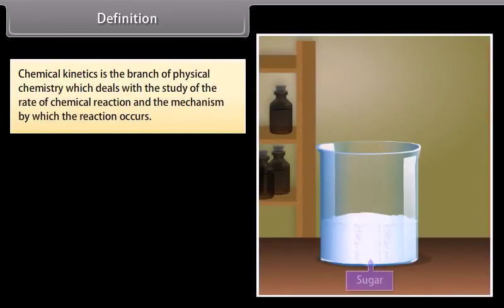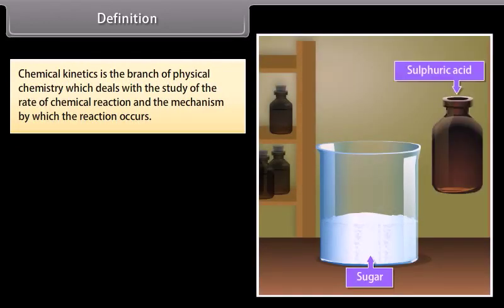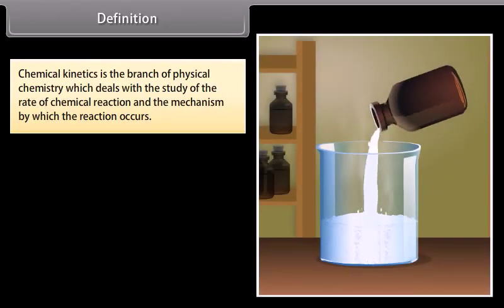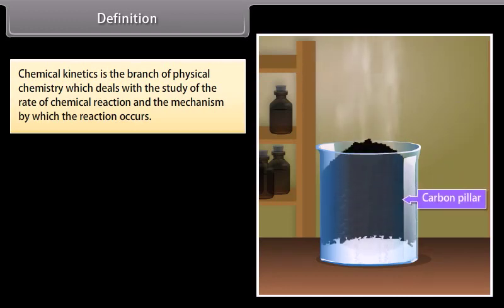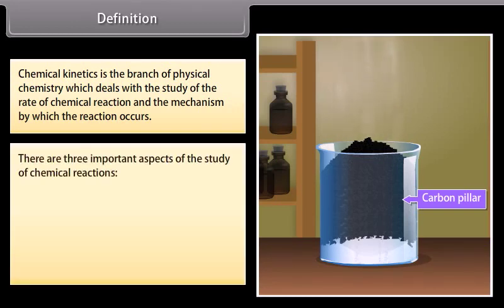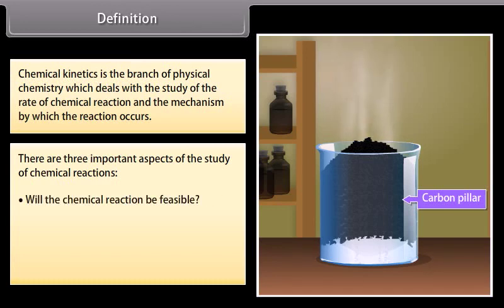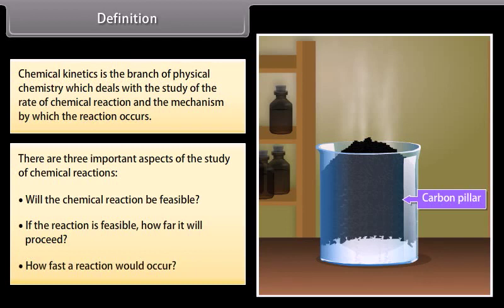Chemical kinetics is the branch of physical chemistry which deals with the study of the rate of chemical reaction and the mechanism by which the reactions occur. There are three important aspects of the study of chemical reactions: will the chemical reaction be feasible? If the reaction is feasible, how far will it proceed? And how fast a reaction would occur?